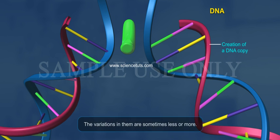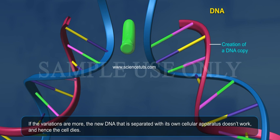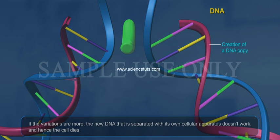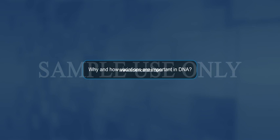The two copies of DNA generated are similar but not identical to the original, and the two copies of DNA have variations between them. The variations in them are sometimes less or more. If the variations are more, the new DNA that is separated with its own cellular apparatus doesn't work, and hence the cell dies.